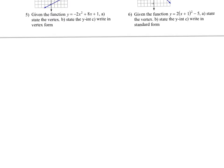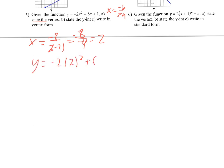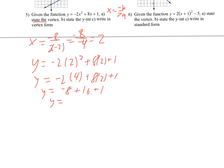Next up, we're going to do number 5. With this function, we want to state the vertex. So the vertex — I'm going to use negative b over 2a. That is our formula for finding the vertex. So this will be negative 8 over negative 4, and that comes out to 2. Now my y value — I'll plug it back in. I've got to do PEMDAS, so I do my exponent first. That's going to turn that into 4. Then I'll multiply: negative 8 plus 16 plus 1. So y equals 8 plus 1, which is 9. So my answer for part A is 2 comma 9.